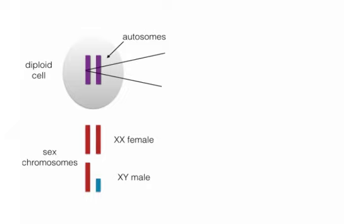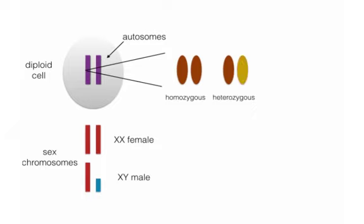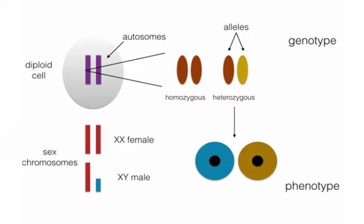If one focuses on any particular gene, it's possible that both copies — each one inherited from one of the parents — are the same, which we refer to as homozygous, or they can be different from one another, in which case we say the individual is heterozygous. The two copies of any particular gene are called alleles, and the particular alleles for any particular gene locus refer to the individual's genotype. The physical expression of a genotype is the phenotype — for example, having blue eyes or brown eyes.